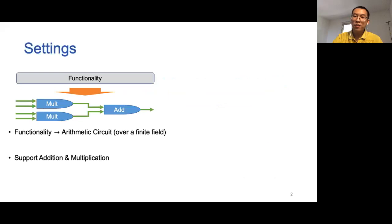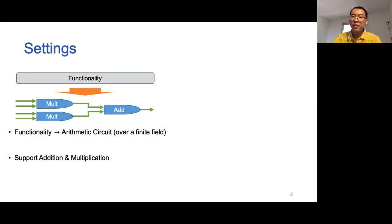Multiparty computation allows several mutually distrusted parties to evaluate a function on their private inputs. It guarantees that the protocol execution does not leak anything about the individual inputs beyond what can be inferred from the function output. Usually, the functionality is represented as a circuit, and in particular, here we choose to use an arithmetic circuit over a finite field.